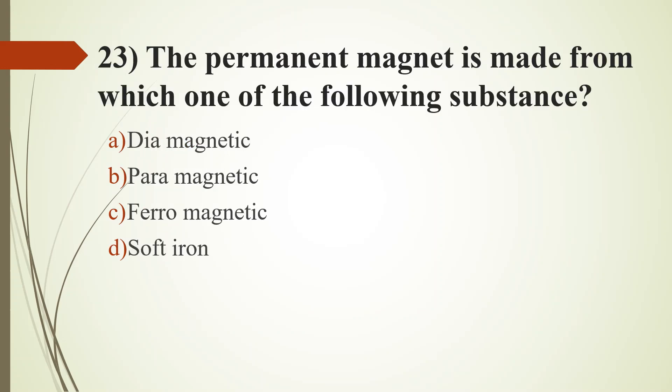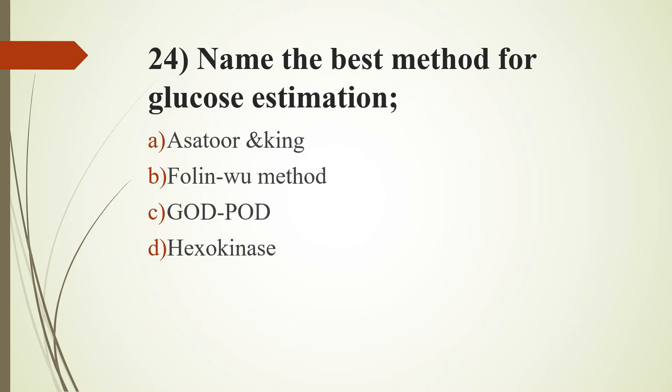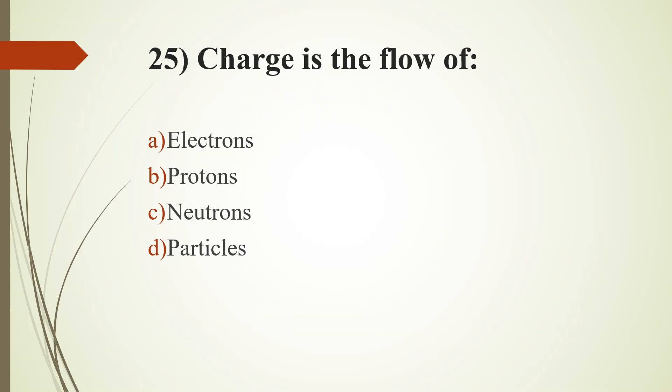23rd question. The permanent magnet is made from which one of the following substances: option A, diamagnetic; option B, paramagnetic; option C, ferromagnetic; option D, soft iron. Answer is option C, ferromagnetic. 24th question. Name the best method for glucose estimation: option A, Somogyi-Nelson; option B, Folin-Wu method; option C, GOD POD; option D, hexokinase. Answer is option D, hexokinase. 25th question. Charge is the flow of: option A, electrons; option B, protons; option C, neutrons; option D, particles. Answer is option A, electrons.